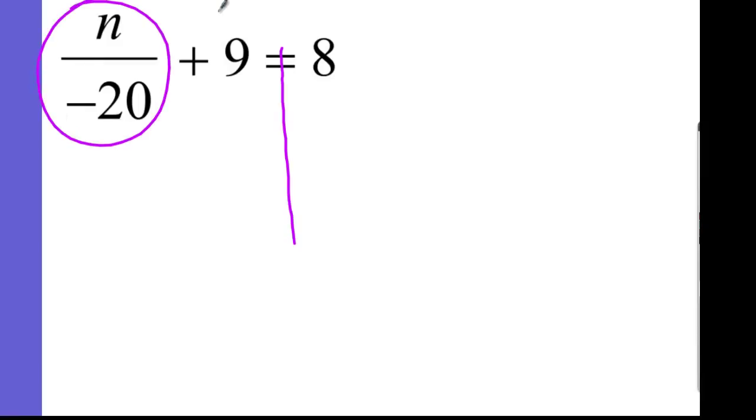We have three different terms: one, two, and three. Two of them are similar or the same - the nine and the eight are the same. The first one, this one right here, has an n with it, so it's not the same as the other two. So first thing we have to do is we have to get rid of this nine.